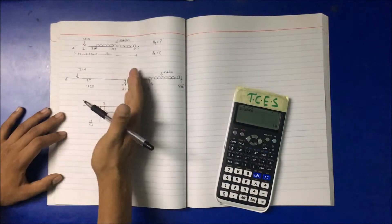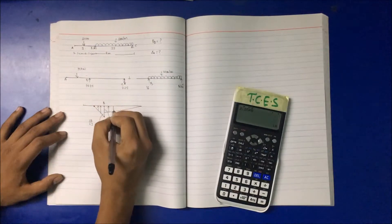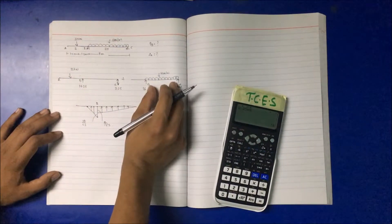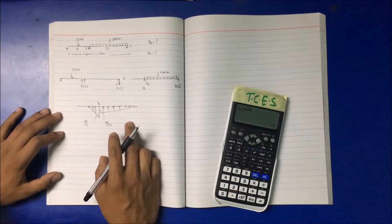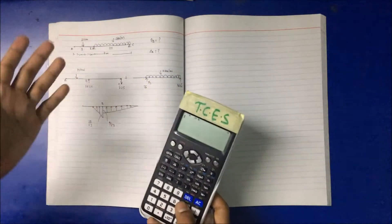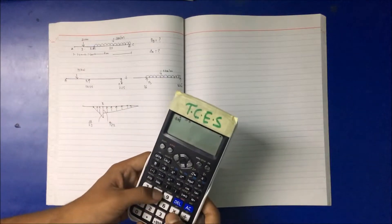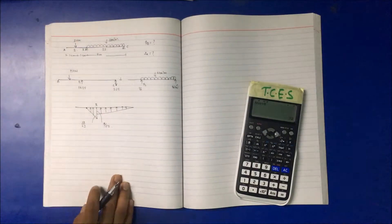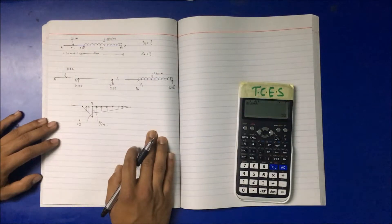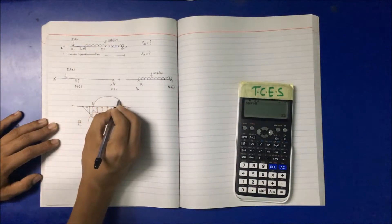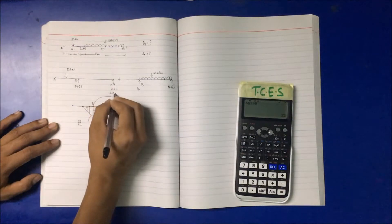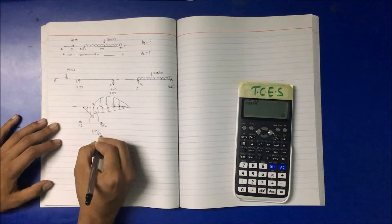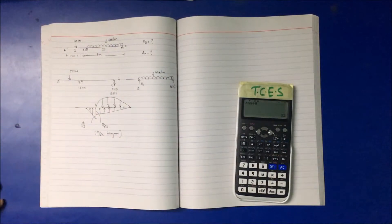The loading is vertically upward and from the right side it is clockwise, so it will be negative 9 by EI. Now considering the UDL, a parabolic curve will be obtained and the maximum bending moment is WL²/8 — so 4 into 8² divided by 8 equals 32. The flexural rigidity is 2, so 32 divided by 2EI gives 16 by EI, a positive moment acting vertically downward. This completes the M by EI diagram.